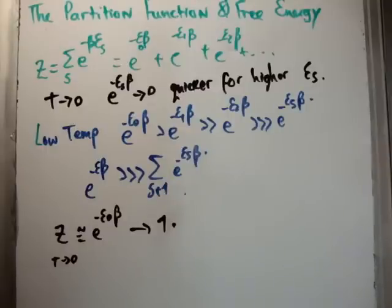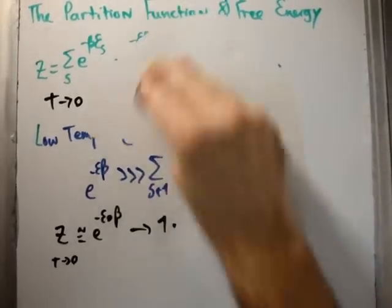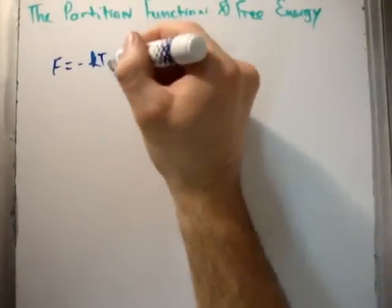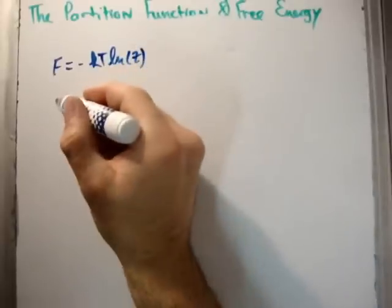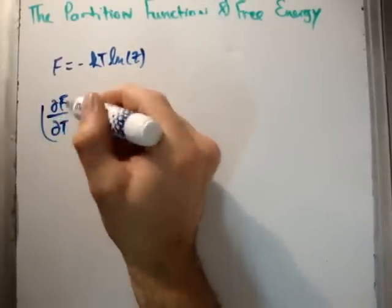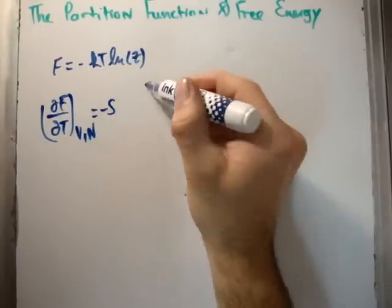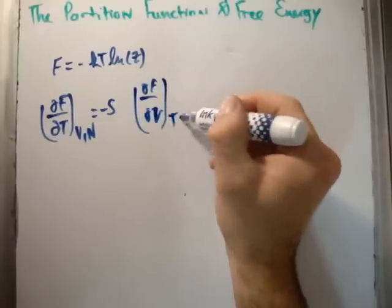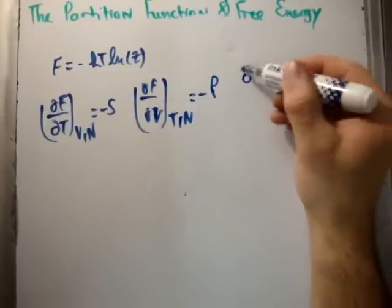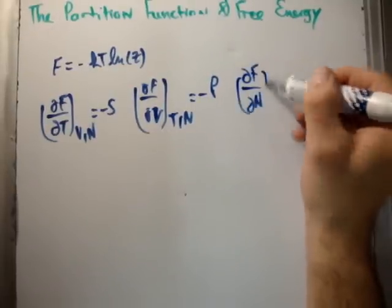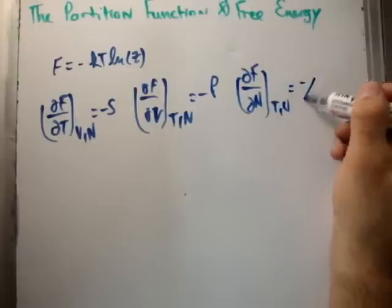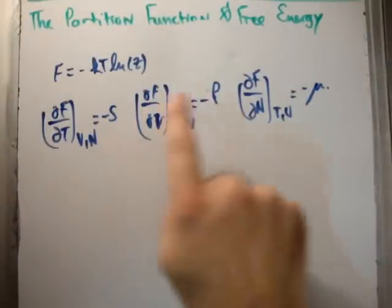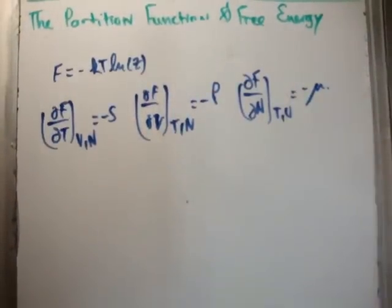The real importance is this: from our thermodynamics, F equals minus kT log Z. But del F del T at constant V and N gives us the entropy. Del F del V at constant temperature and number of particles gives us the pressure. And del F del N at constant T and V gives us the chemical potential. So getting Z is not so difficult, which means getting F isn't so difficult, so getting pressure, entropy, or chemical potential isn't so hard either.